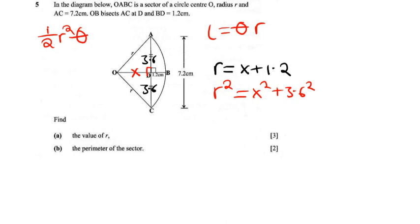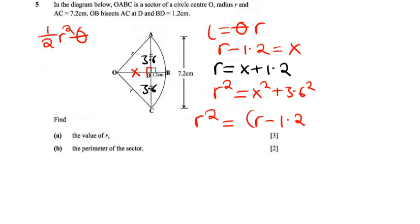Let's see what we can do. Since we want to find the value of R, we can make X the subject in the first formula. If we do that, R minus 1.2 equals X. So therefore we have R² equals — we are now putting R minus 1.2 in place of X. In other terms, OD is the difference between the radius and 1.2.